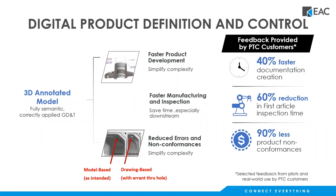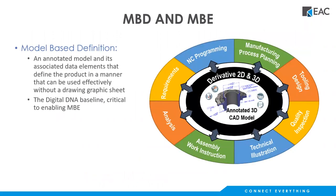What are some of the benefits of MBD? Once we have our fully 3D annotated model with correctly applied tolerancing and annotations, we can expect faster product development, faster manufacturing and inspection, and reduced errors and non-conformances. This is backed up by feedback from PTC customers: up to 40% faster documentation creation, 60% reduction in first article inspection time, and up to 90% less product non-conformances. This data alone shows that MBD makes product development more efficient and increases the quality of manufactured products.